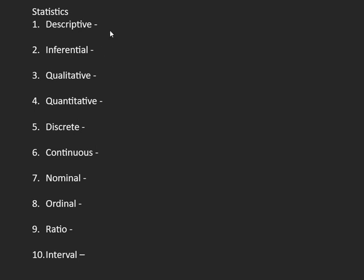There are two kinds of statistics: descriptive and inferential. If you're going to search or open any book, all of the definitions there are correct. What's important today is to differentiate one from the other, so that if there are statements given to you, you can already differentiate if it would be one or the other.